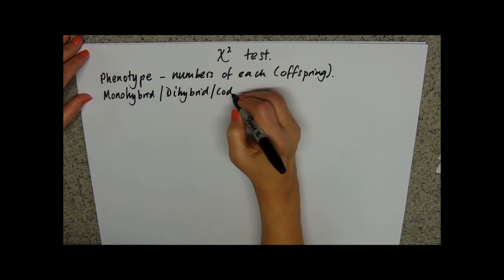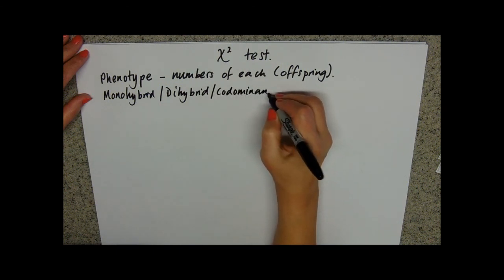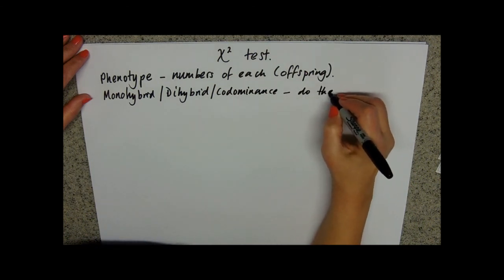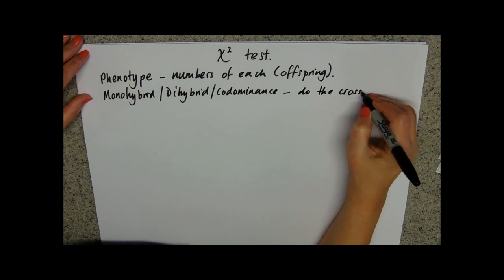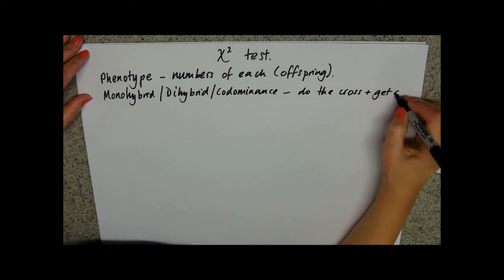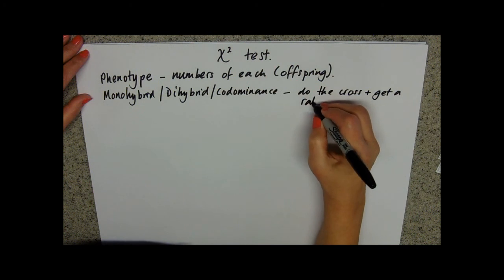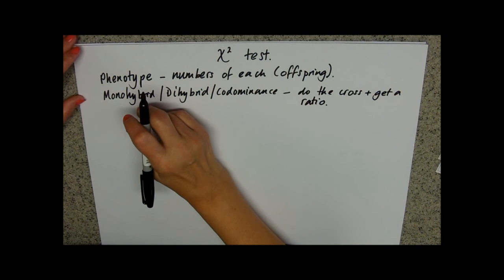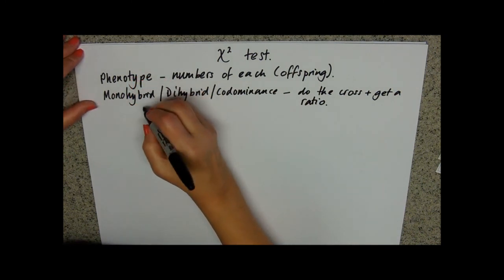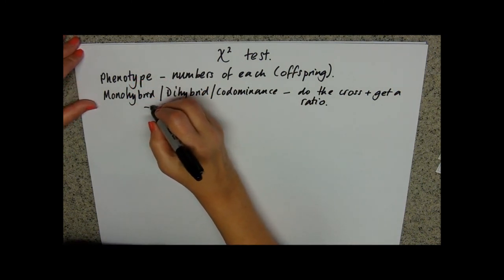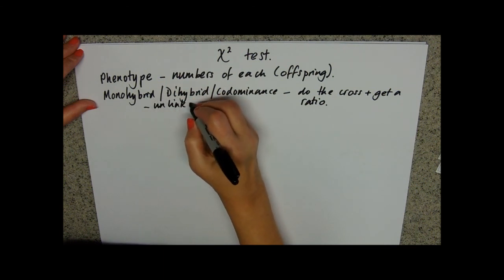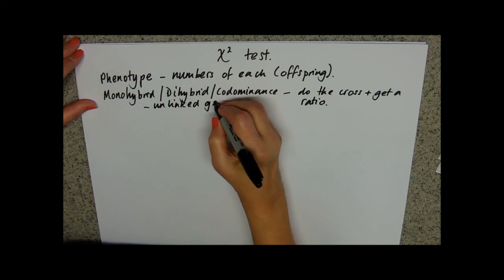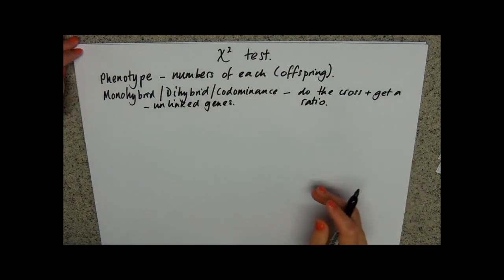You also consider co-dominance, and generally you will then do the cross and get a ratio. For linked crosses you can't really derive a ratio, so we'd be looking at dihybrid ones with unlinked genes, talking about random assortment and working out gametes.